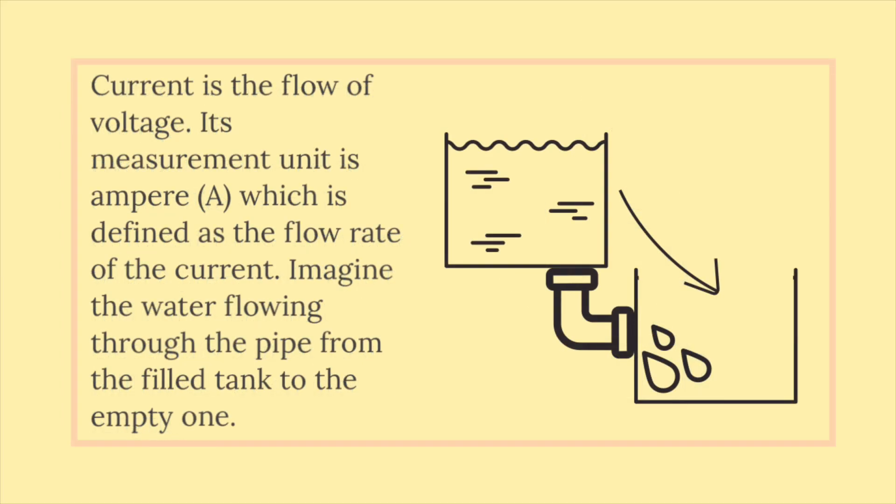Current is the flow of voltage. Its measurement unit is ampere (A), which is defined as the flow rate of the current. Imagine the water flowing through the pipe from the filled tank to the empty one.